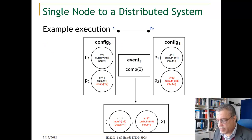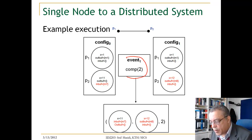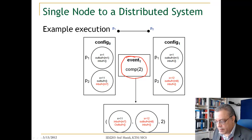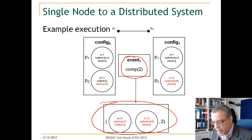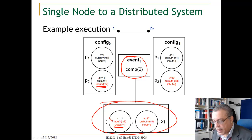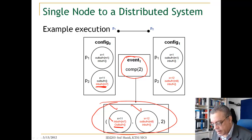Here is an example execution showing an applicable computation event. This computation event is applicable because the input buffer and output buffer are present, and the event will transform the state of P2 from one state to another.